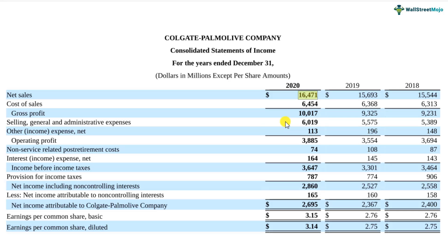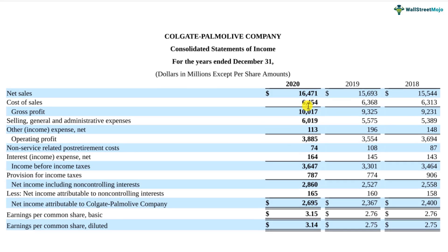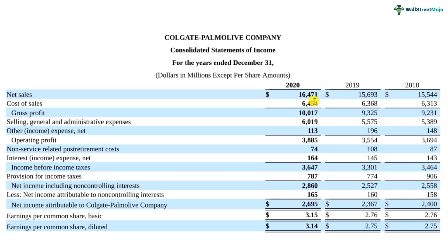Colgate as a company is pretty big in size and might be doing exceptionally well. But if you look at the income statement only, what we have are just absolute numbers — net sales figures, cost of sales, gross profit, etc. To develop an intuitive understanding of how the company has been doing over a period of years — whether 2020 was a better year compared to 2019 — we will have to look at ratio analysis.